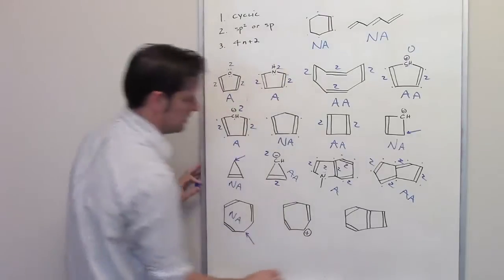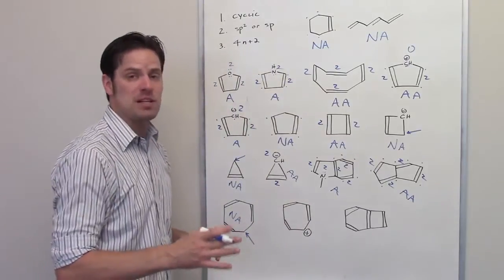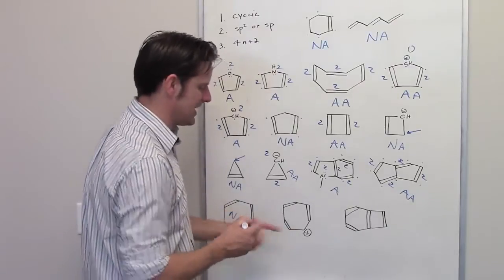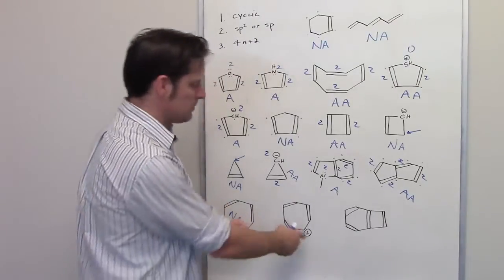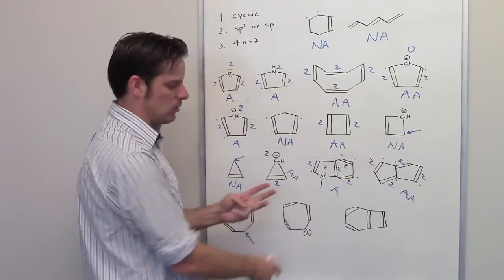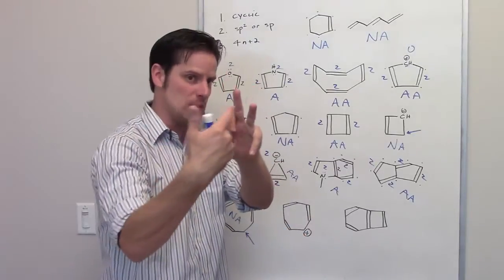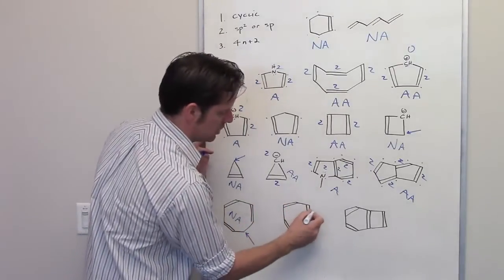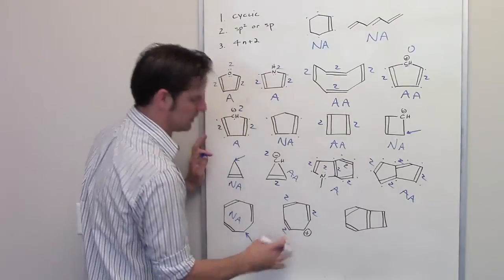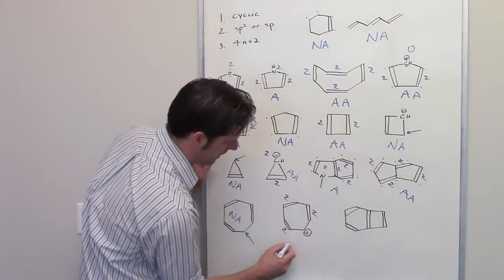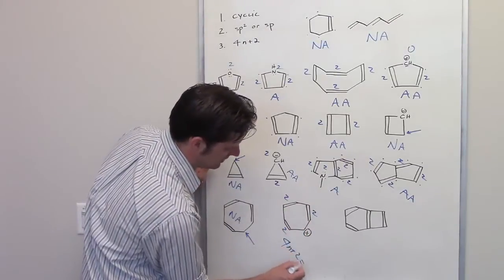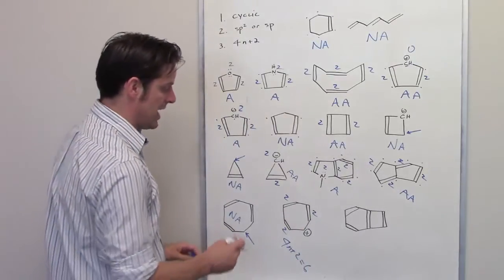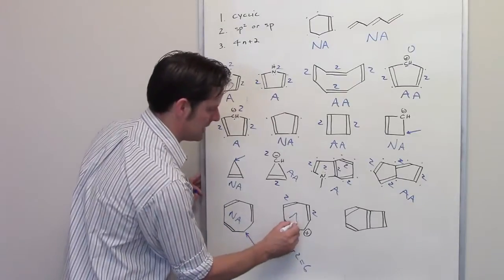Over here, let's look at this molecule. Is it cyclic? Yes. Is everything in it sp2 or sp hybridized? Yes — this carbon atom has a positive charge and is bonded to one hydrogen, a group up here, and a group to the left. That is sp2. Remember, carbocations count as zero pi electrons. I've got two pi electrons here, two there, and two there — total 6. Can I solve 4n + 2 = 6? Yes — it meets all three criteria, so it is aromatic.